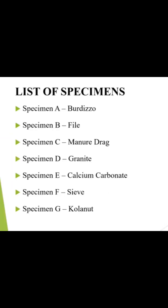Here are the list of specimens for the 2025 Neco Agricultural Science Practical Examination. Specimen A is the Bodhisattal, specimen B is a Phyde, specimen C is a manual drug, D is Granite, and E is Calcium Carbonate.